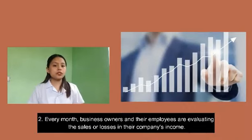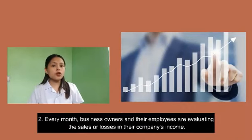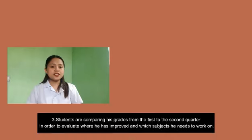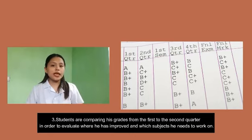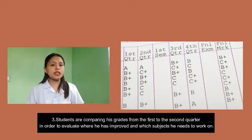Number 2: Every month, business owners and their employees are evaluating the sales or losses in their company's income. Number 3: Students are comparing their grades from the first quarter to the second quarter in order to evaluate where they have improved and which subjects they need to work on.